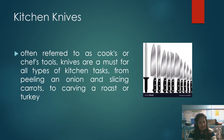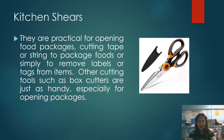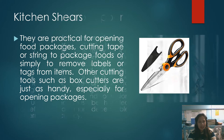Kitchen knives, often referred to as cook's or chef's tools, are a must for all types of kitchen tasks — from peeling an onion and slicing carrots to carving a roast or turkey. There are different knives, each with specific uses, including the bread knife and the chef's knife. Kitchen shears are practical for opening food packages, cutting tape or string to package foods, or removing labels or tags from items.